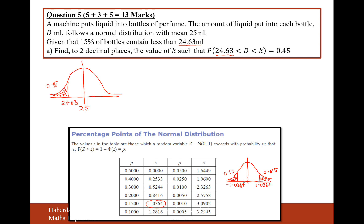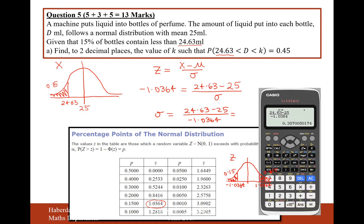So now what I need to do is I need to remember the link between an x distribution and a z distribution. Now the link between an x distribution and a z distribution is x minus mu over sigma equals the z value. So in this question here, the z value is minus 1.0364 equals the x value of 24.63 minus the mean, in this question is 25, divide that by the standard deviation that we don't know. And using that, we can work out that the standard deviation is going to be 24.63 minus 25 divided by minus 1.0364. And if we now turn to our calculator, this is going to give us an answer of 0.357.